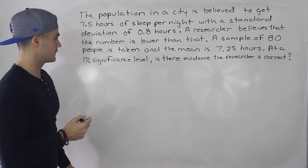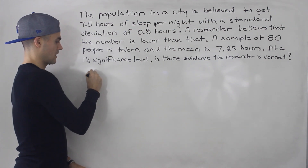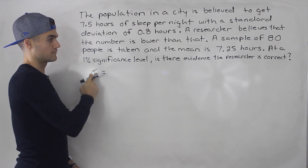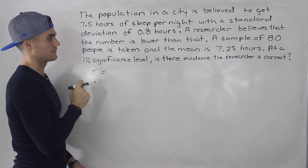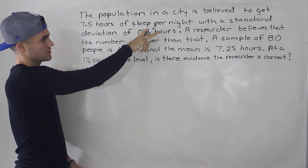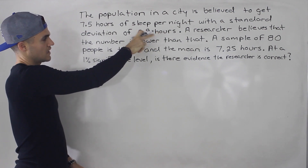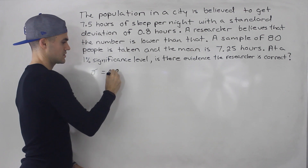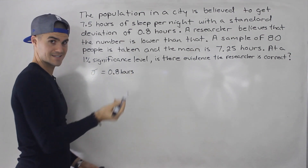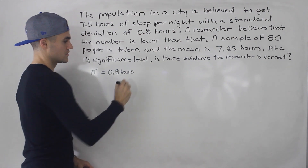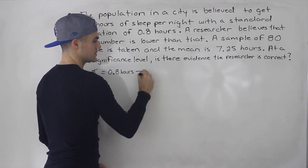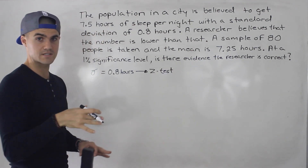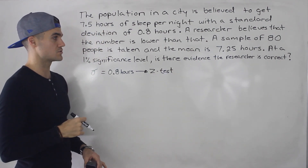The first thing I like to do with these types of questions is figure out: is the population standard deviation known or not? Is it mentioned anywhere in the question? Notice that it is — when we're talking about the population, we're told the standard deviation is 0.8 hours. So in this case it is given, it is known, so we know that we're going to be doing a Z test, basing the hypothesis test on the Z distribution.